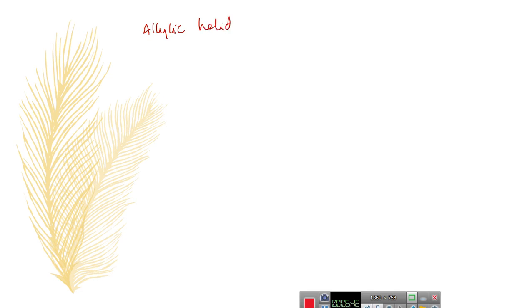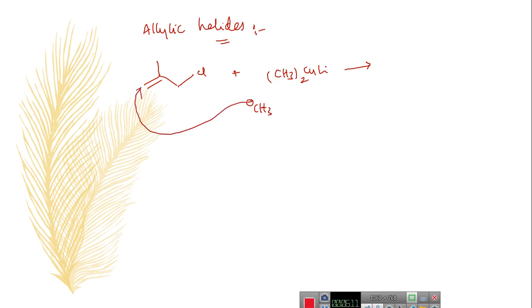As we discussed previously, allylic halides also undergo nucleophilic displacements with organocopper reagents. For example, this allylic halide, when treated with dimethyl lithium cuprate, the methyl nucleophile generally attacks at the end of the pi system. That means it involves an SN2' reaction by the simultaneous expulsion of the leaving group, which gives a rearranged allylic product. Likewise, you can also treat Gilman's reagent with allylic acetates, where the acetate is also a good leaving group.